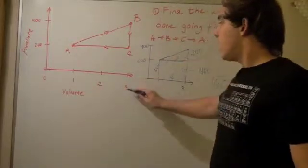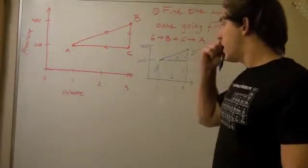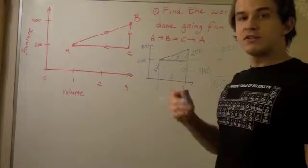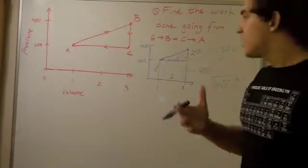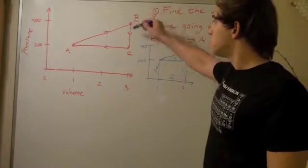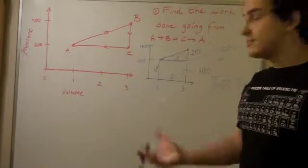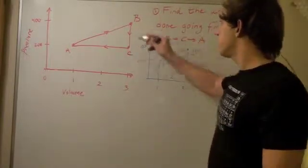We go from B, volume of 3, to C, also a volume of 3. 3 minus 3 is 0. So, 0 times the integral from this point to this point is simply 0. So, this part is 0.